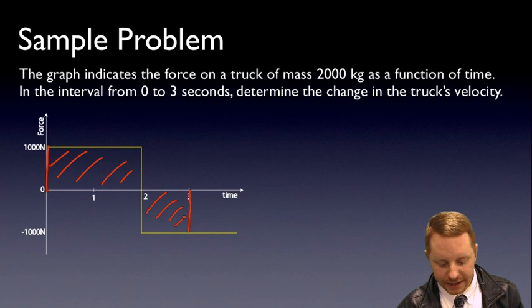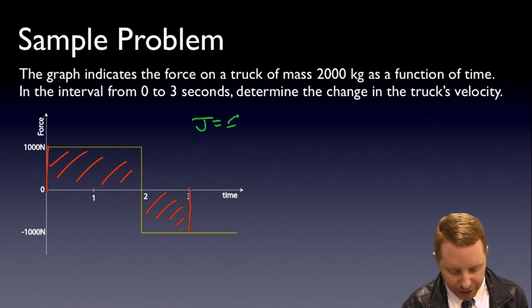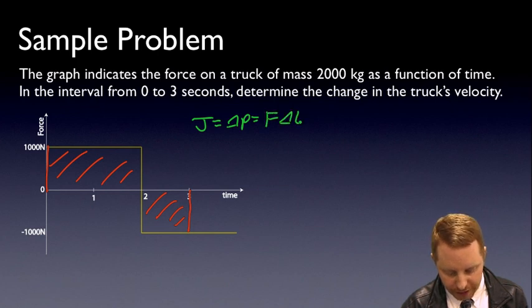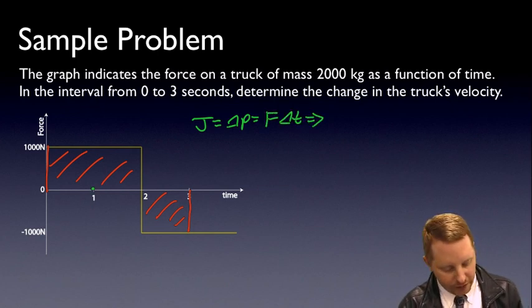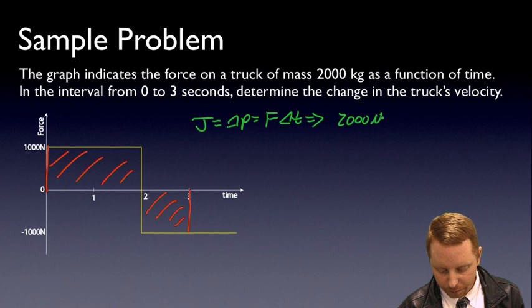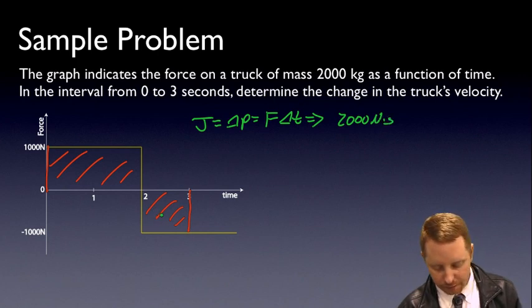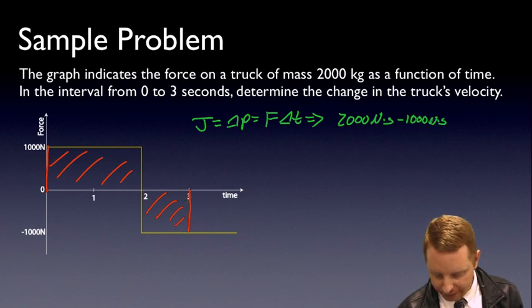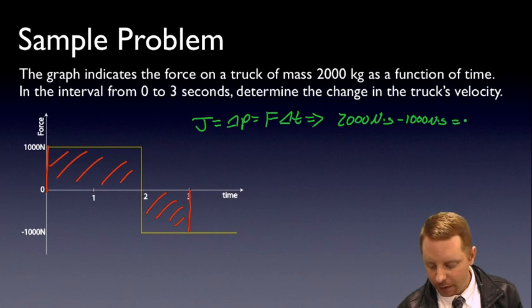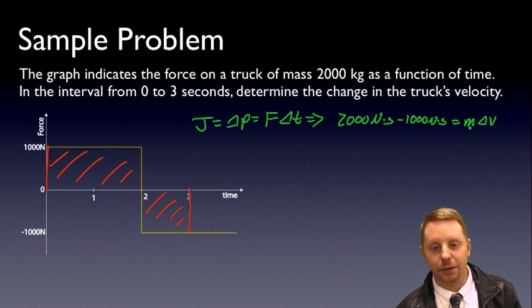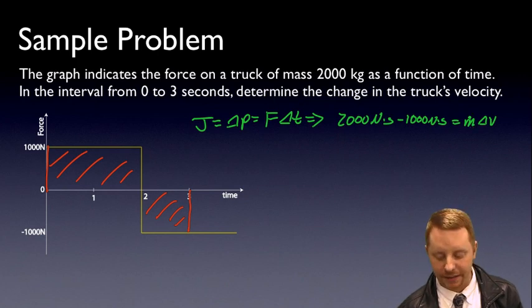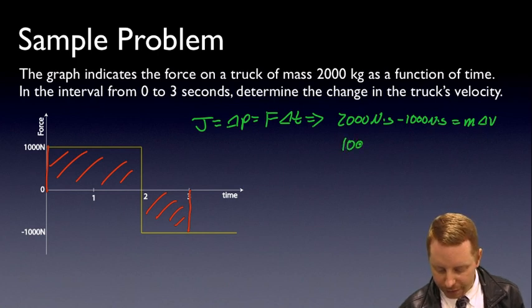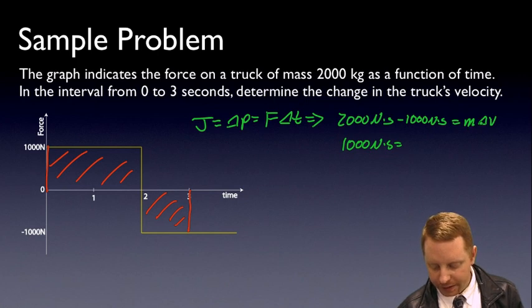Well, it should be pretty easy to see since we know that impulse is change in momentum or force times time. Our area here, 2 seconds times 1,000 newtons is going to be 2,000 newton seconds, plus negative 1,000 newton seconds, so minus 1,000 newton seconds. And that has to be equal to our change in momentum, or M delta V, assuming that mass stays constant, which is a reasonable assumption to make in this case. So 2,000 newton seconds minus 1,000 newton seconds, I get 1,000 newton seconds equals M delta V.